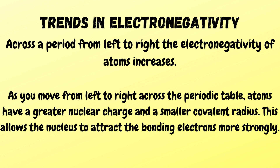The trend in electronegativity across a period from left to right is that it increases. As you move from left to right across a periodic table, atoms have a greater nuclear charge and smaller covalent radius. This allows the nucleus to attract the bonding electrons more strongly.